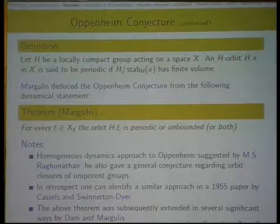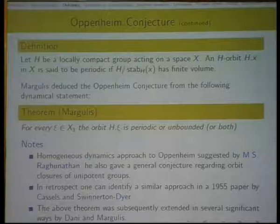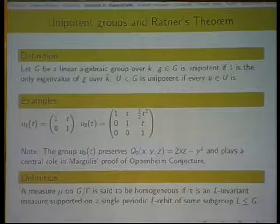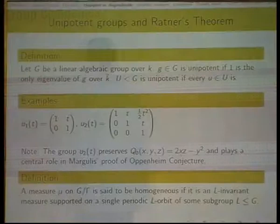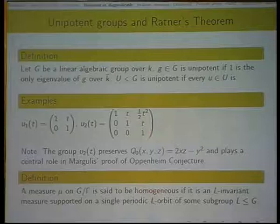In retrospect, one can identify a similar approach in a 1955 paper by Cassels and Swinnerton-Dyer which essentially conjectures this exact theorem that Margulis proved in a different language. But what the insight Raghunathan had, which Cassels and Swinnerton-Dyer didn't have, is the importance of unipotent elements and unipotent groups for the study of such orbit closure questions. The above theorem was subsequently extended in several significant ways by Dani and Margulis. So Professor Dani is also one of the pillars of Indian mathematics and he is the editor of this Intelligence and also has a nice piece there. The last time I came to India it was to honor Dani's 60th birthday.